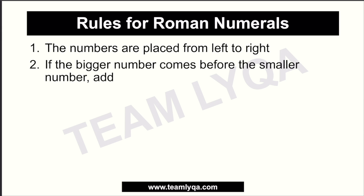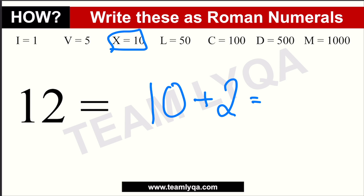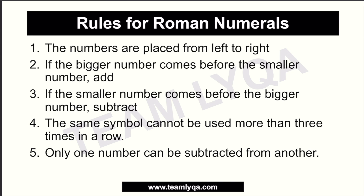Let's review the rules we've used. Numbers are placed and read from left to right. If the bigger number comes before the smaller number, you add them. For example, 12 is like 10 plus 2 — so you write X for 10, then add two I's, giving you XII. Rule 3: if the smaller number comes before the bigger number, you subtract. So VI is 5 plus 1 or 6, while IV is 5 minus 1 or 4, because I is smaller than V and comes before it.